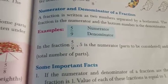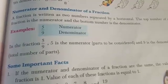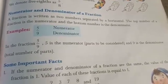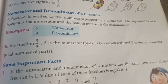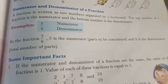A fraction is written as two numbers separated by a horizontal line. The top number of a fraction is the numerator and the bottom number is the denominator.